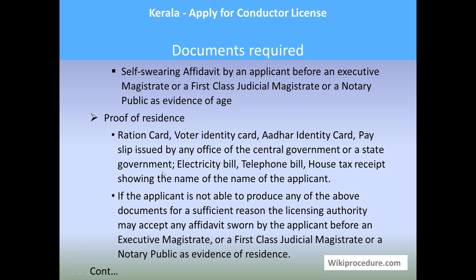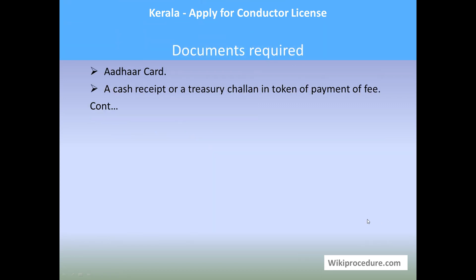For proof of residence: ration card, voter ID card, other ID cards, a payslip issued by any office of the central government or a state government, electricity bill, telephone bill, or house tax receipt showing the name of the applicant. If the applicant is not able to produce any of the above documents, the licensing authority may accept an affidavit sworn before an executive magistrate, a first-class judicial magistrate, or a notary public as evidence of residence. Also required is a cash receipt of a treasury challan as token of payment of fees.